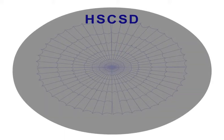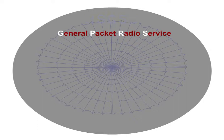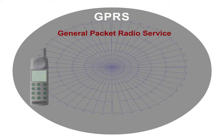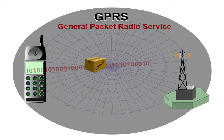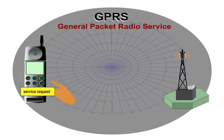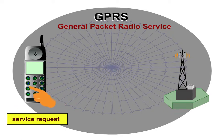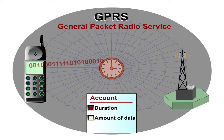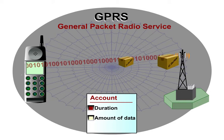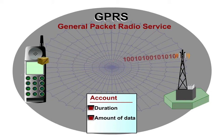In contrast to HSCSD, the General Packet Radio Service, GPRS, is packet-switched instead of circuit-switched. The radio network resources are only used if data is actually being transmitted. Thus, billing is no longer based on the duration of the call, but on the amount of transmitted data.